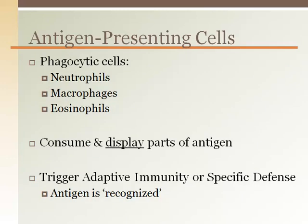Another important characteristic of phagocytic cells is that they function as antigen-presenting cells. When they phagocytose an antigen, some of the antigen parts are regurgitated and displayed on their surface. This display allows cells from the adaptive immunity or specific defenses, like B or T cells, to recognize it if the body had been exposed to that antigen before.